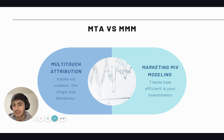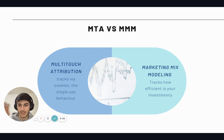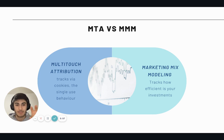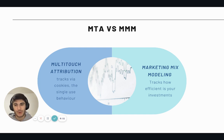It's important to understand that multi-touch attribution focuses on the user, while marketing mix modeling focuses on how efficient your investments are. The focus switches from the user to how well your marketing investment performs. Marketing mix models have a more financial perspective compared to multi-touch attribution, which is more human-behavioral.